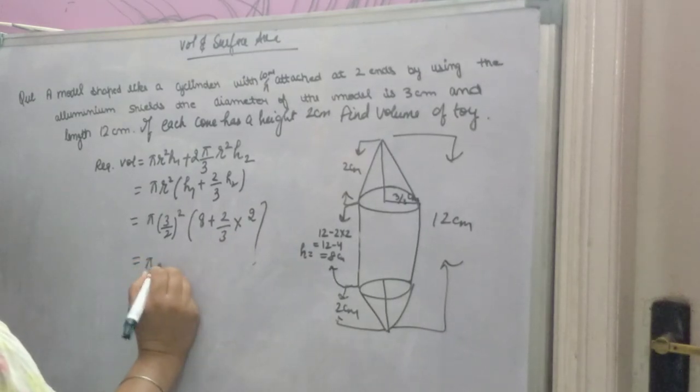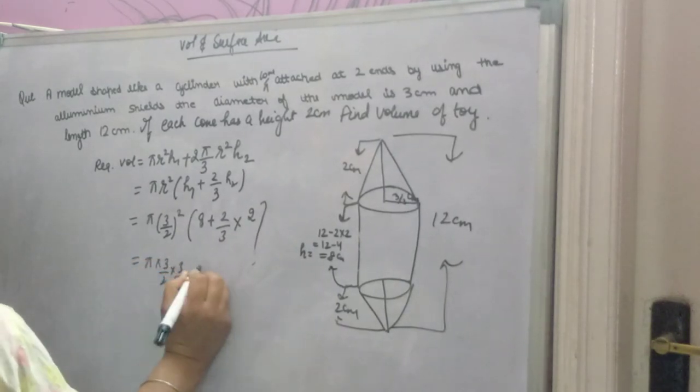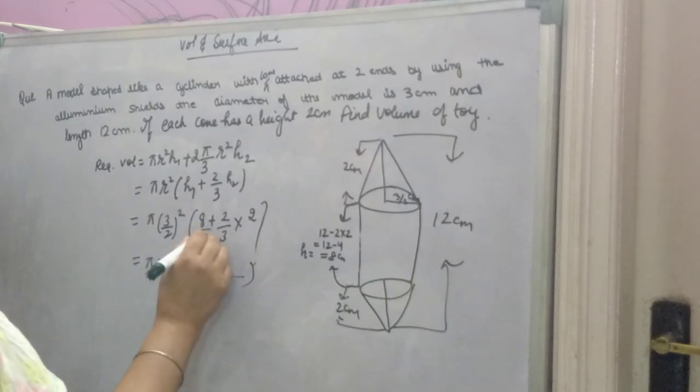Now, you have to solve pi into 3 by 2 into 3 by 2. LCM, you will take 3. Now, you will solve further.